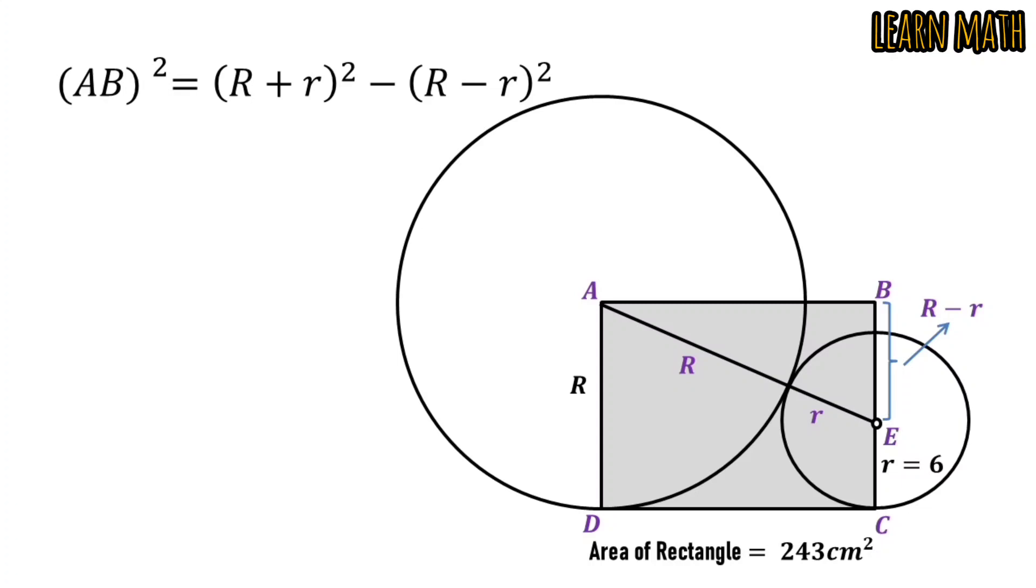Simplify this and we can write AB² is equal to 4Rr. Put the value of small r is equal to 6 and simplify again. We will get AB is equal to √(24R).